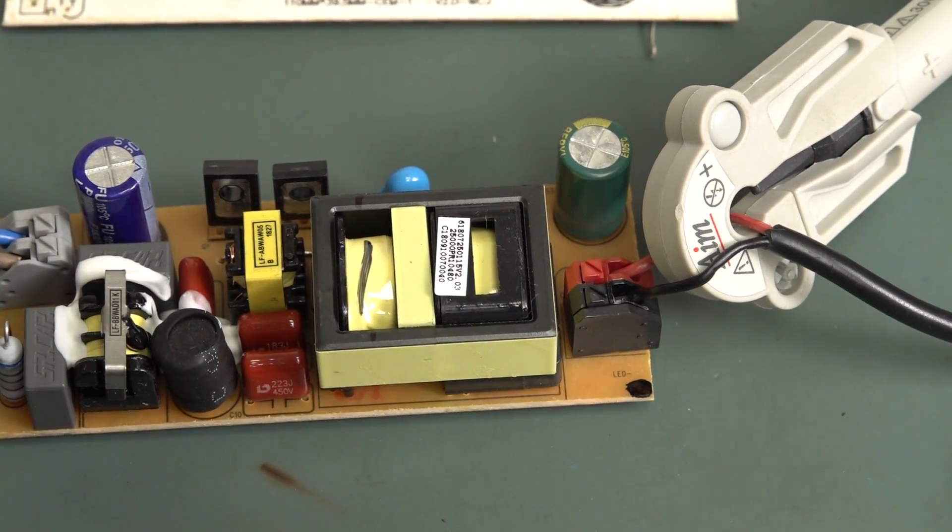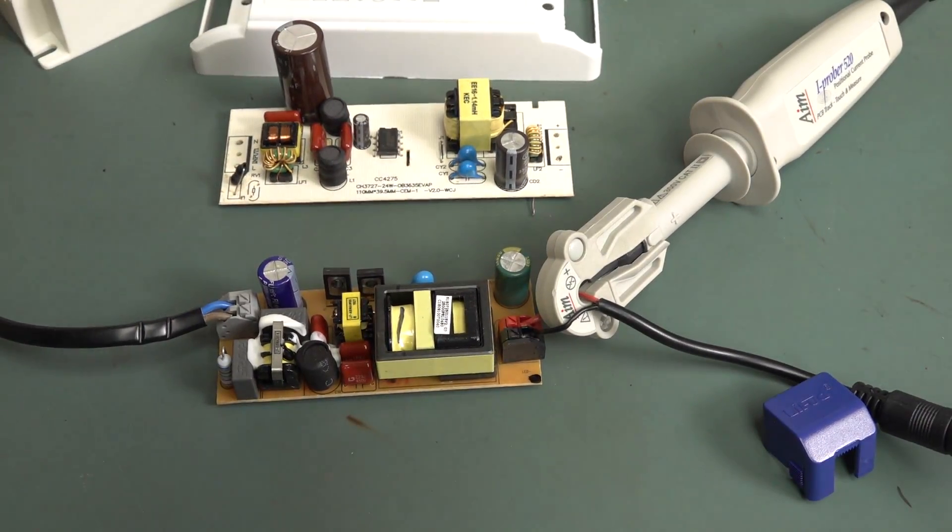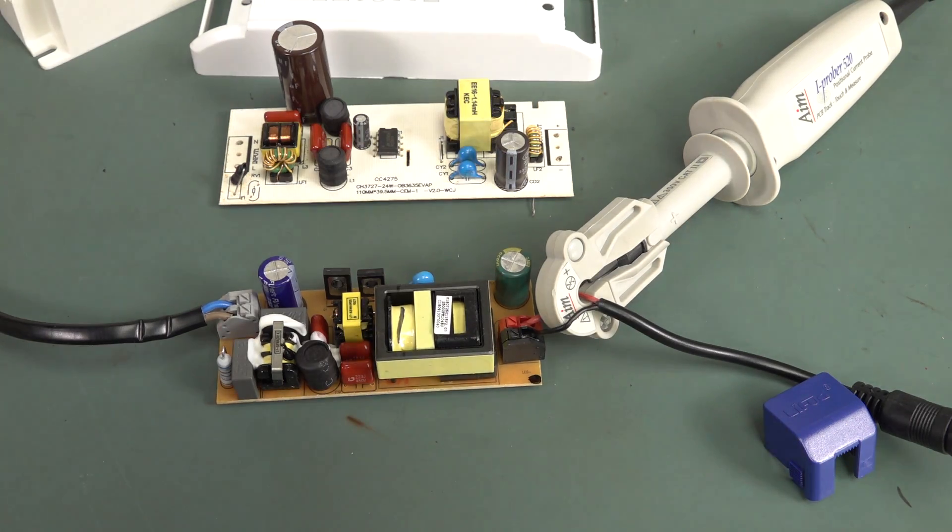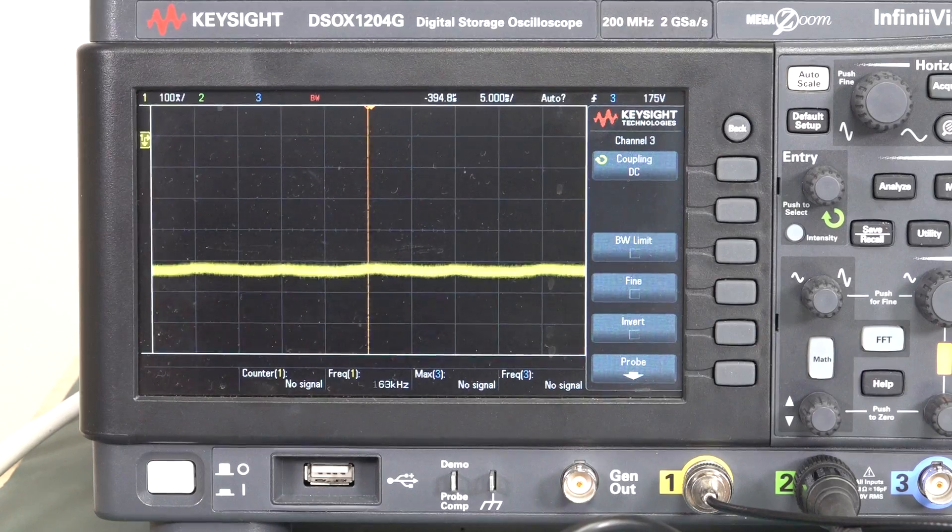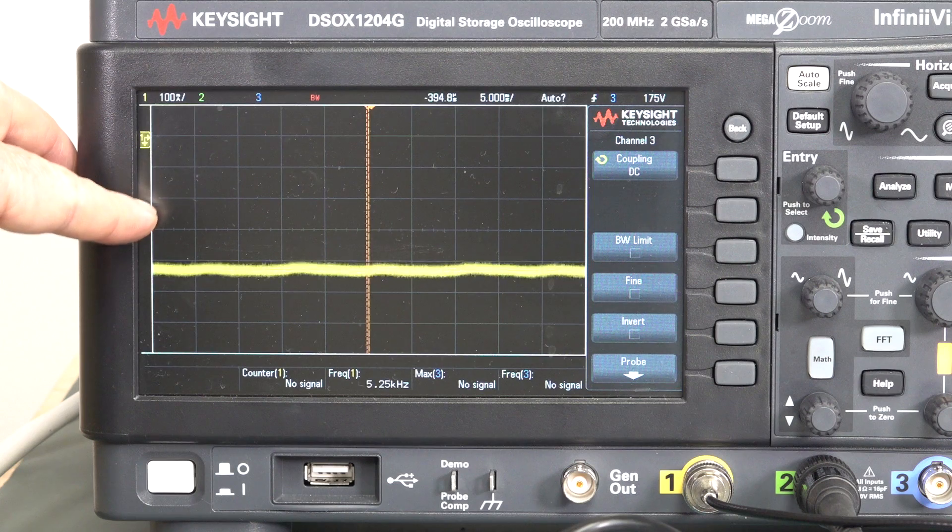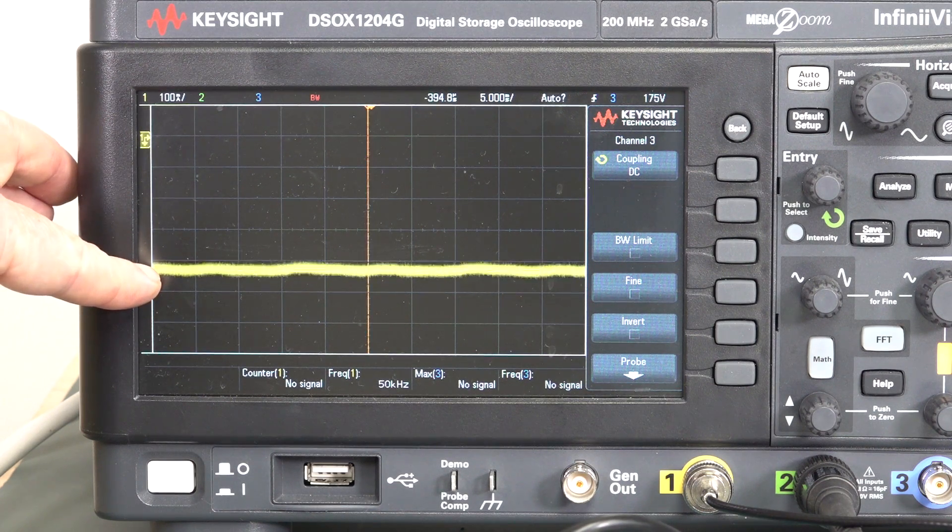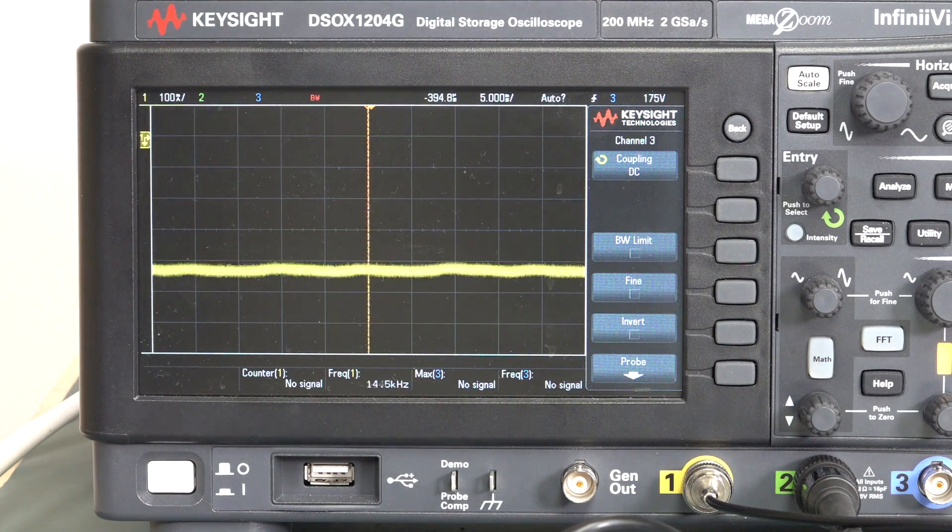All right. I've got my current clamp probe on there. Power it on. And let's have a look at the scope. Here it is. Still got the same 100 milliamp per division. 100, 200, 300, 400. So we're just over 400-odd milliamps there. And look at it.